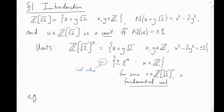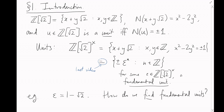I told you that 1 − √2 is a fundamental unit, but I didn't really tell you how I came up with this number. How do we find fundamental units in general? A bit of good guesswork was all I needed in this case, and you can sometimes do this when the number under the square root sign is nice.